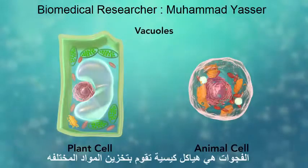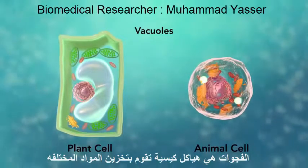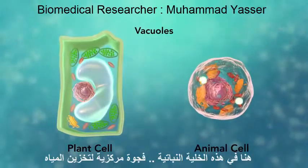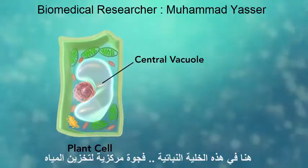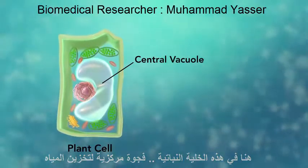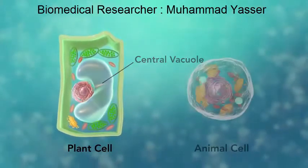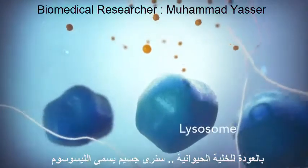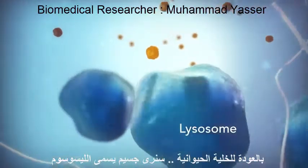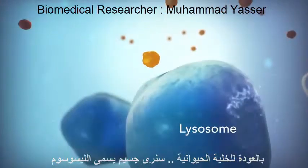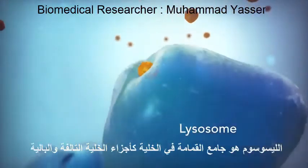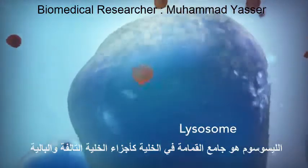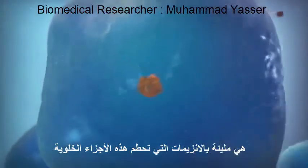Vacuoles are sac-like structures that store different materials. Here in this plant cell, the central vacuole stores water. Going back to the animal cell, you will see an organelle called a lysosome. Lysosomes are the garbage collectors that take in damaged or worn-out cell parts. They are filled with enzymes that break down this cellular debris.